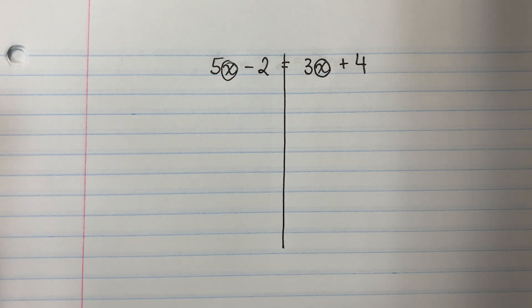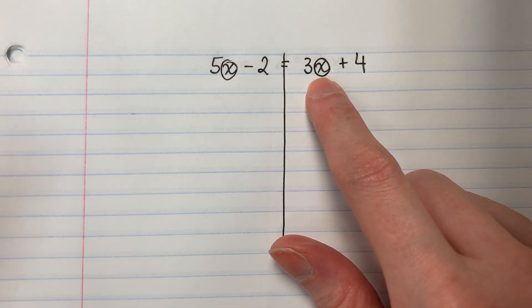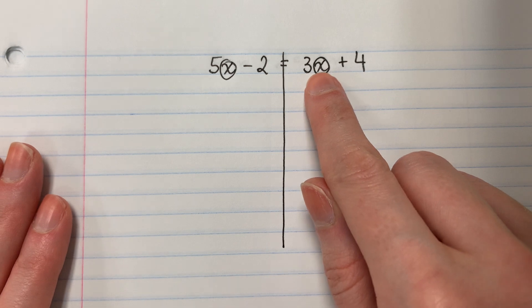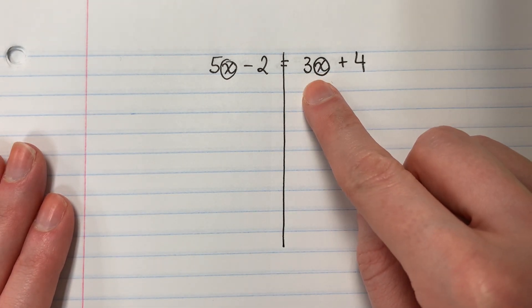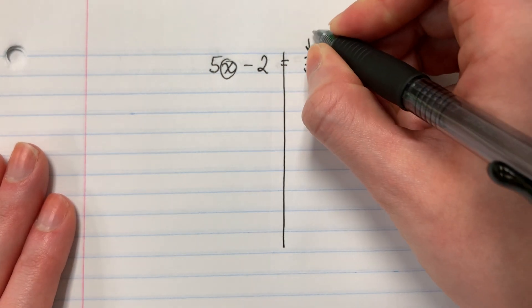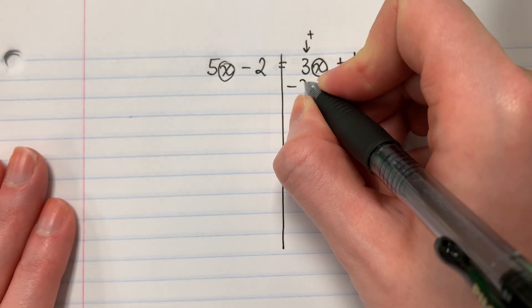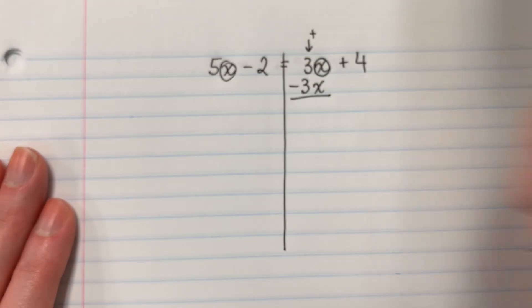To simplify it, always move the letter that is on the right. Para simplificar eso, siempre mueve la letra que está a la derecha. So we're going to go ahead and move 3x because it's on the right. Entonces, vamos a mover 3x porque está a la derecha. This is positive 3x — es positivo 3x — the opposite of positive is negative. El opuesto de positivo es negativo. So, minus 3x. And we're going to copy horizontally. Vamos a copiar horizontal.